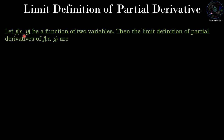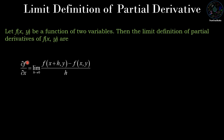Definition: Let f be a function of two variables. The limit definition of the partial derivative of f with respect to x is: ∂f/∂x = limit as h approaches 0 of [f(x+h, y) − f(x, y)] / h. Partial derivative with respect to x means the derivative of f with respect to x when y is constant. So in the definition, y does not change, only x changes from x to x+h, and we divide by the difference h.